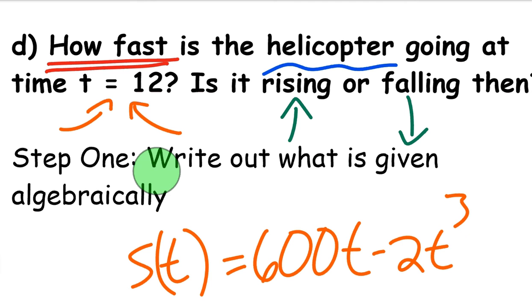Step one, just like we've been doing with these motion problems, is to write out what is given algebraically. So we're given S(t) equals 600t minus 2t cubed. This gives the position equation of the helicopter. Again, the helicopter is going up and coming down, and we want to know at time t equals 12, is it going up or going down, and how fast is it going?